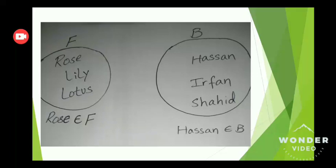Another example is set B — 3 boys named Hassan, Irfan, and Shahid. Hassan belongs to set B. Irfan belongs to set B. Shahid also belongs to set B. So all 3 boys are the members, are the elements of set B.